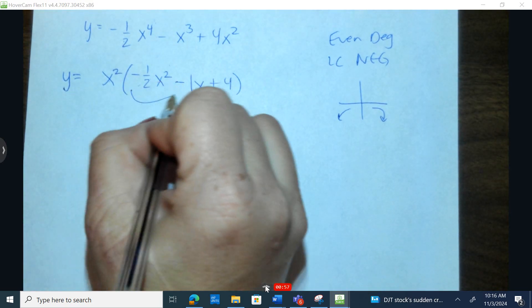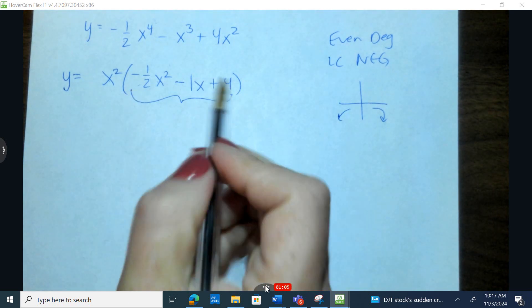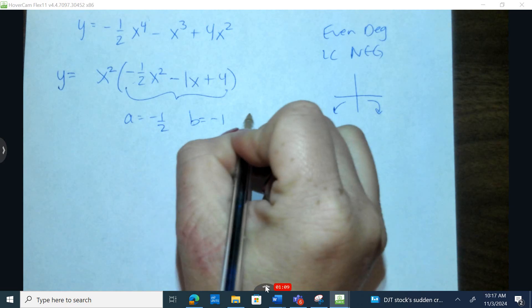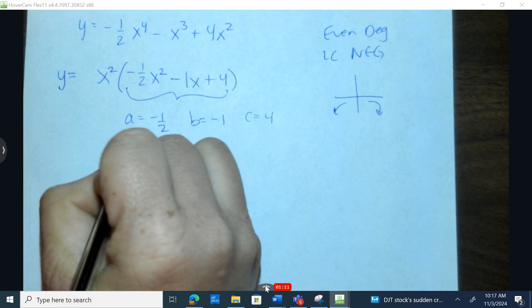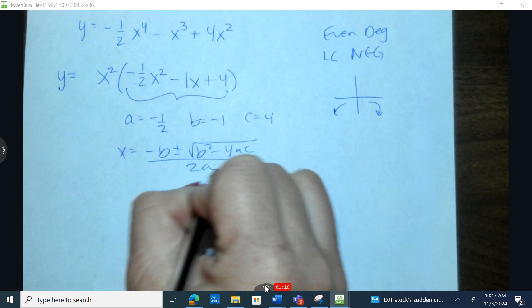Now let's see if this is factorable. If not, I'll use the quadratic formula. Maybe that's what you want to try right away if this seems overwhelming. So a is negative 1/2, b is negative 1, and c is 4. x equals negative b plus or minus b squared minus 4ac all over 2a. Remember, you're not using a calculator.